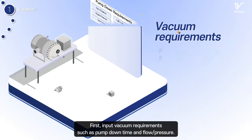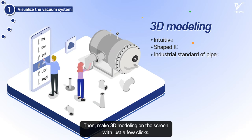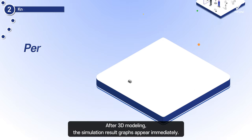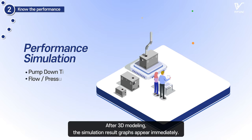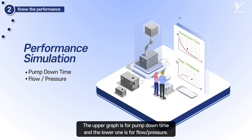First, input vacuum requirements, such as pump down time and flow pressure. Then, make 3D modeling on the screen with just a few clicks. After 3D modeling, the simulation result graphs appear immediately. The upper graph is for pump down time, and the lower one is for flow pressure.